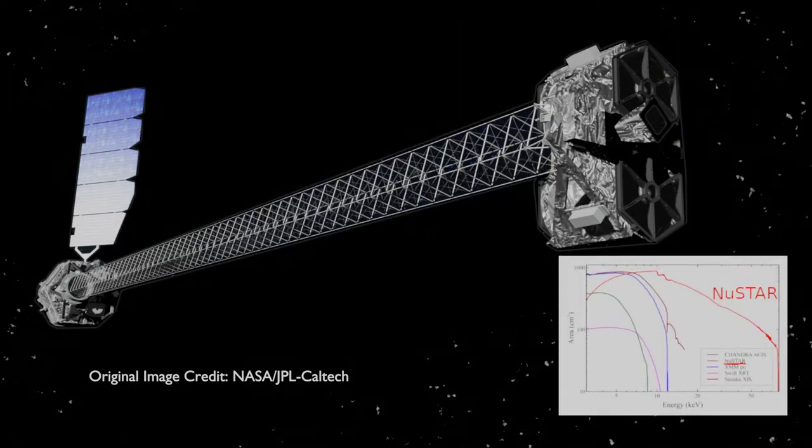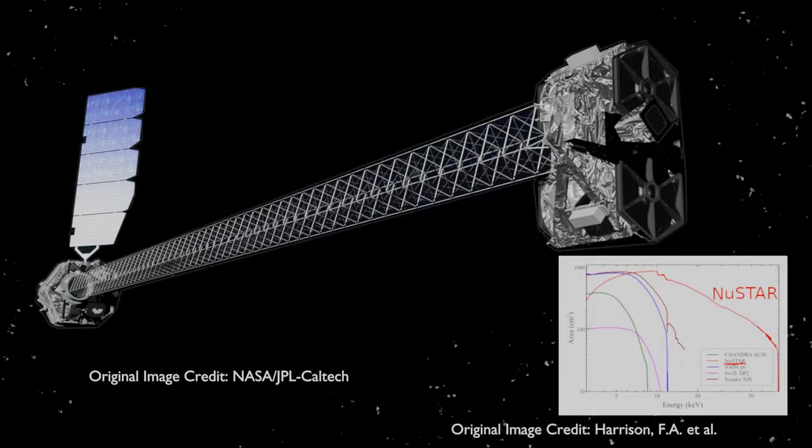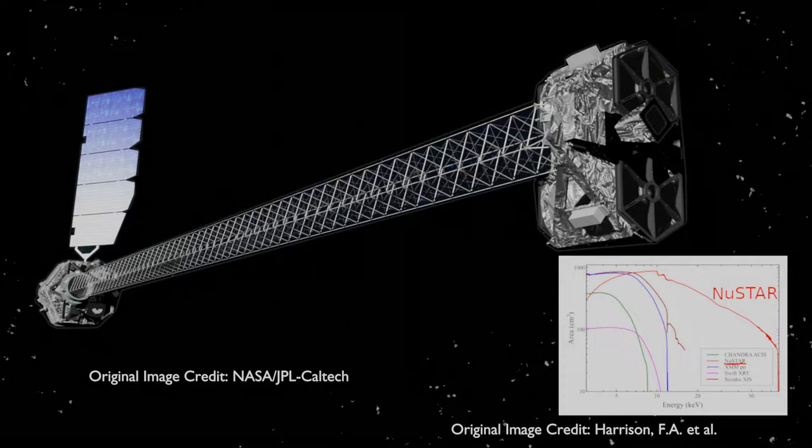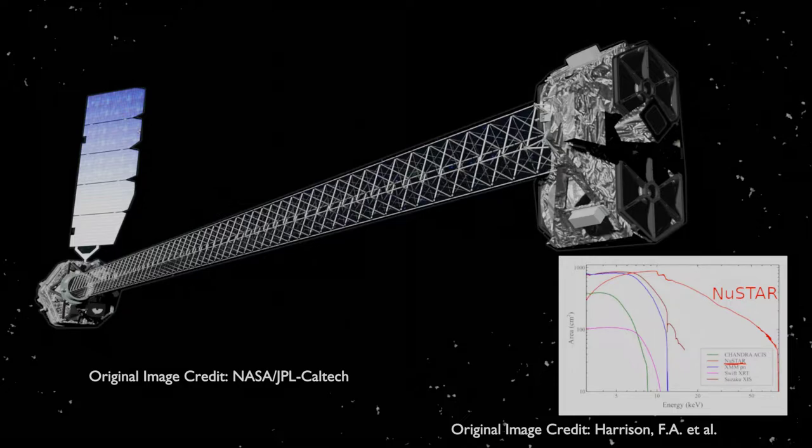This stood out as the two other most comparable missions, Chandra and XMM-Newton had hard cutoffs at 10 KEV. NuSTAR was designed to operate between 3 and 79 kiloelectron volts, providing data deep into the hard X-ray band.